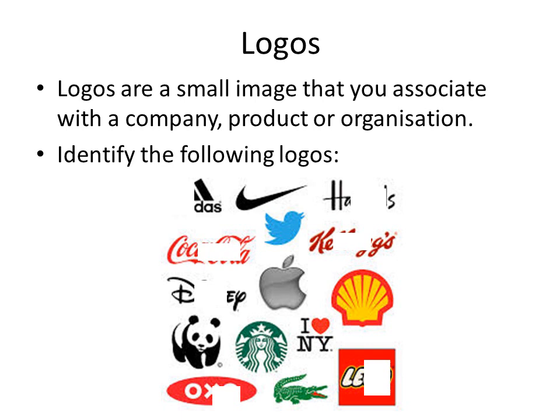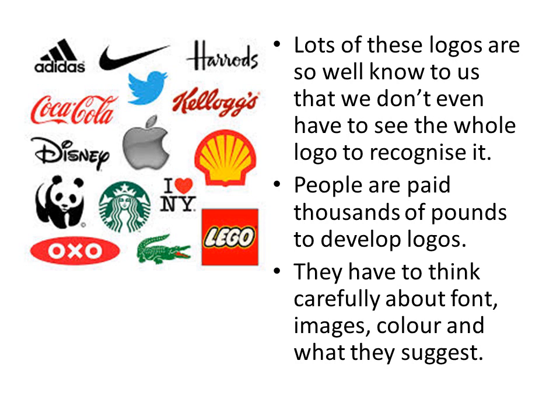Another thing you could write about is a logo. Nearly all texts included in the exams over the last 12 years have had a logo. Logos are small images that you associate with a company, product, or organisation. People are paid thousands of pounds to develop these logos — they have to think carefully about font, images, colour, and what they suggest. Try to identify the logos shown, some of which have blank spaces over parts of them. Many logos are so well known that you don't even need to see the whole logo to recognise it.